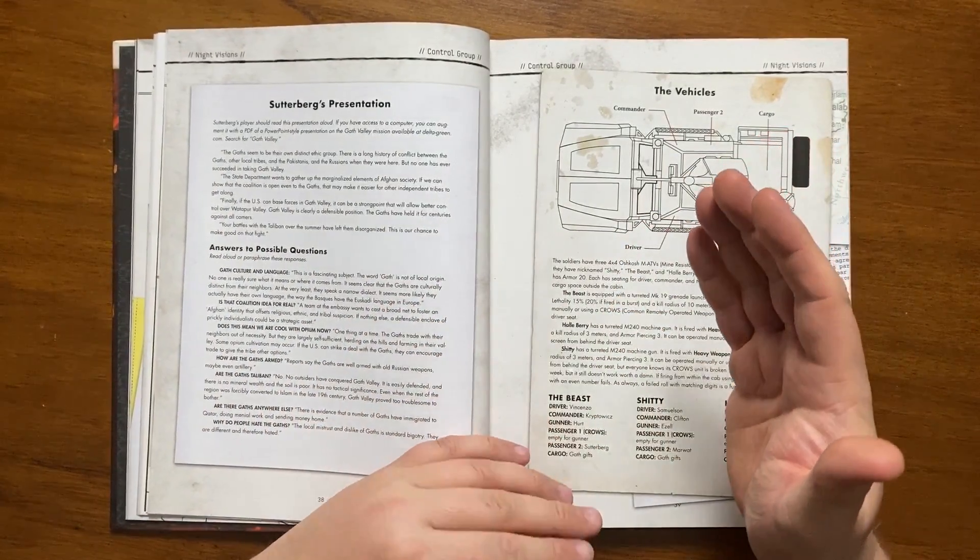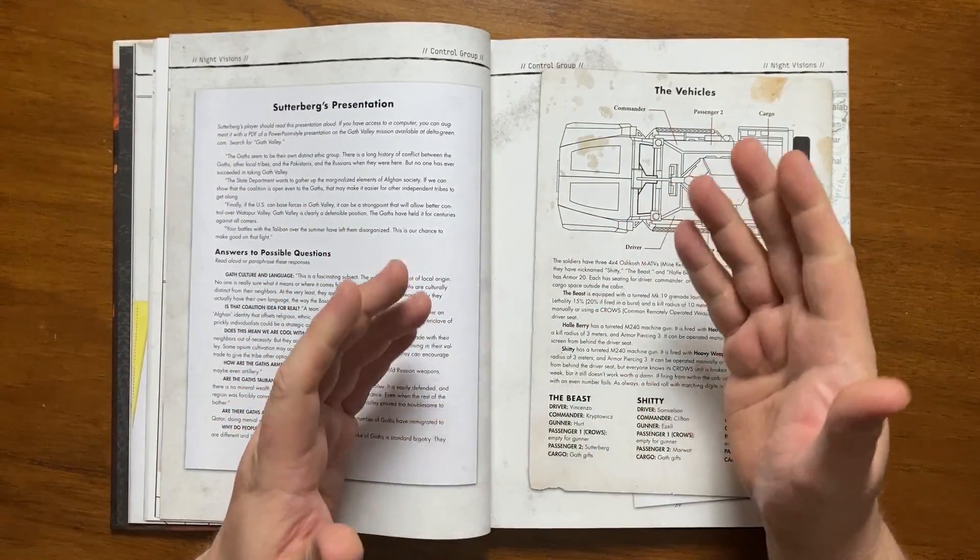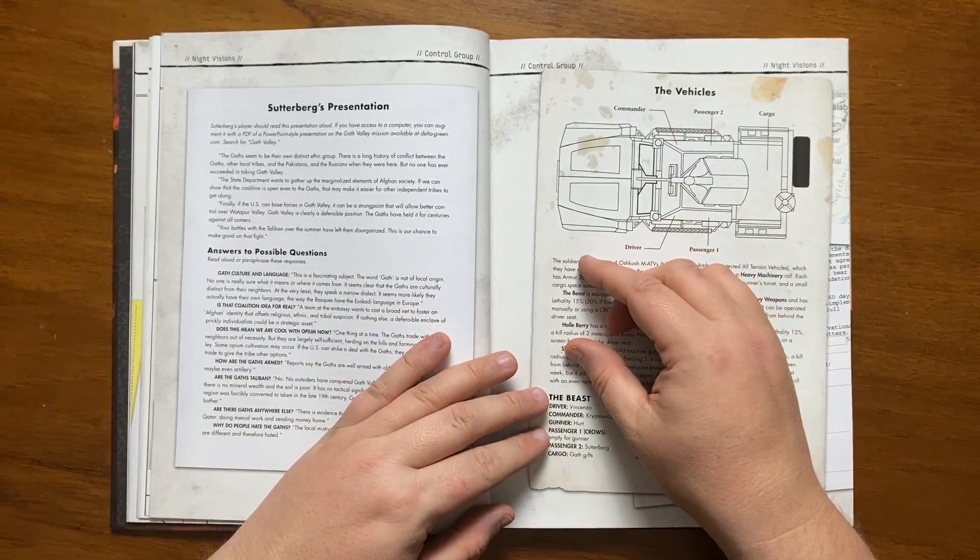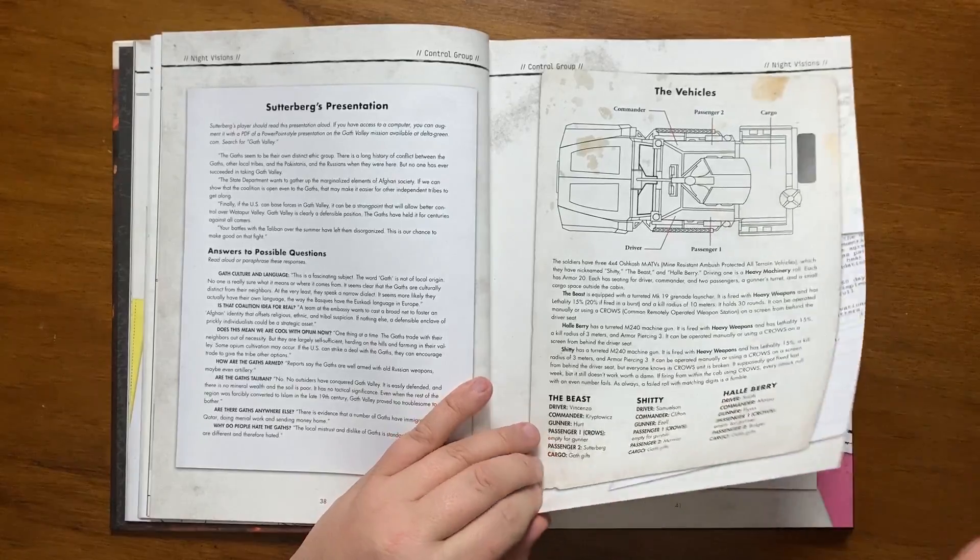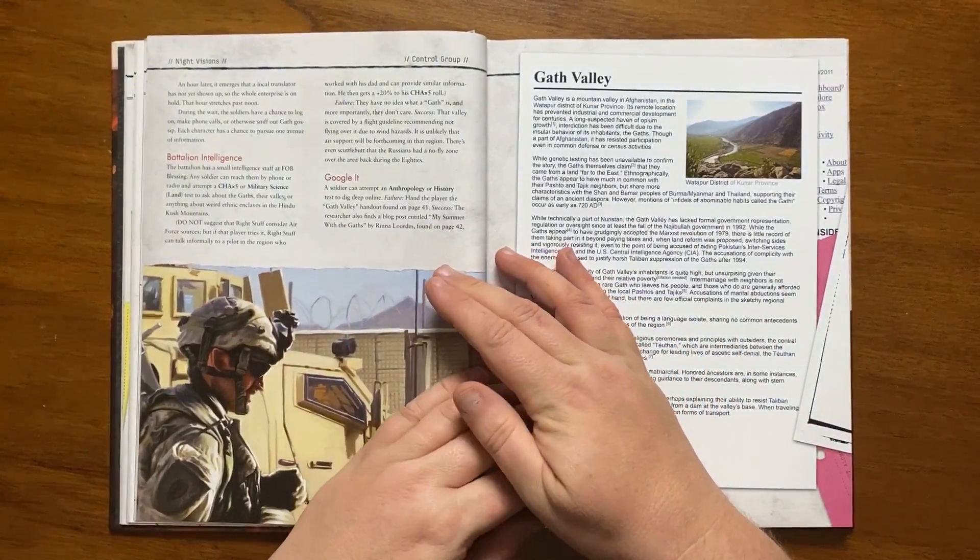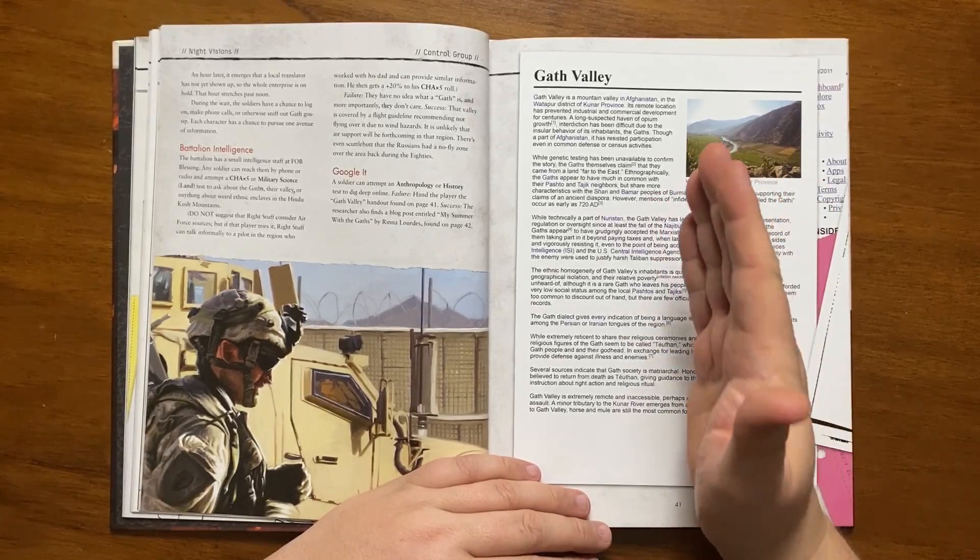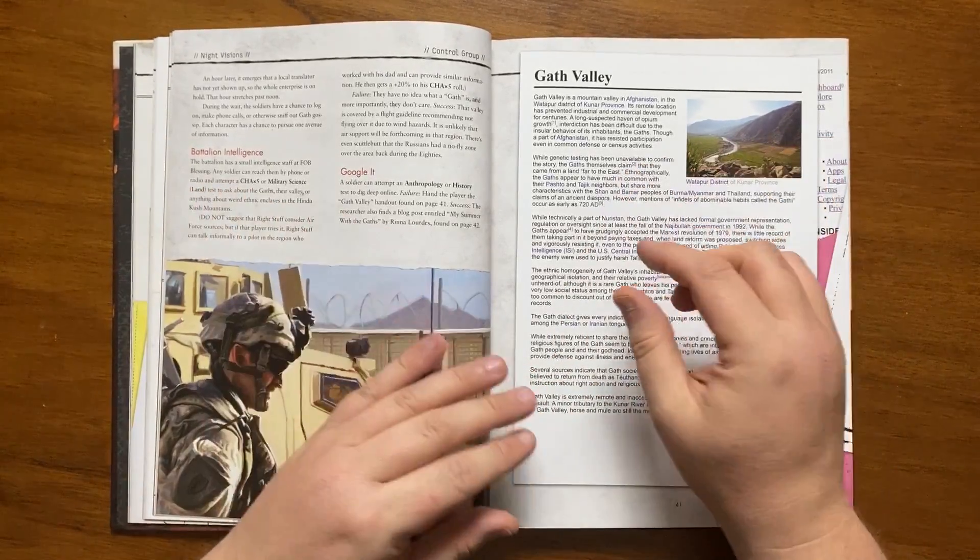The whole purpose of speaking to the Gath is to make Gath Valley a defensible position while attempting to gather up the marginalised elements of Afghan society under one national identity. The soldiers can discover that nobody really knows where the Gath came from, and that they are culturally distinct from their neighbours. They are said to be armed with Russian weapons, and are faced with bigotry and mistrust from all others. It then details the MATVs that the soldiers use, and then shifts back to the soldiers' own investigations into the Gath. If they manage to reach out to the right people, they can discover that pilots are recommended not to fly over the valley due to wind hazards, and that the Russians had similar protocol in the 1980s.